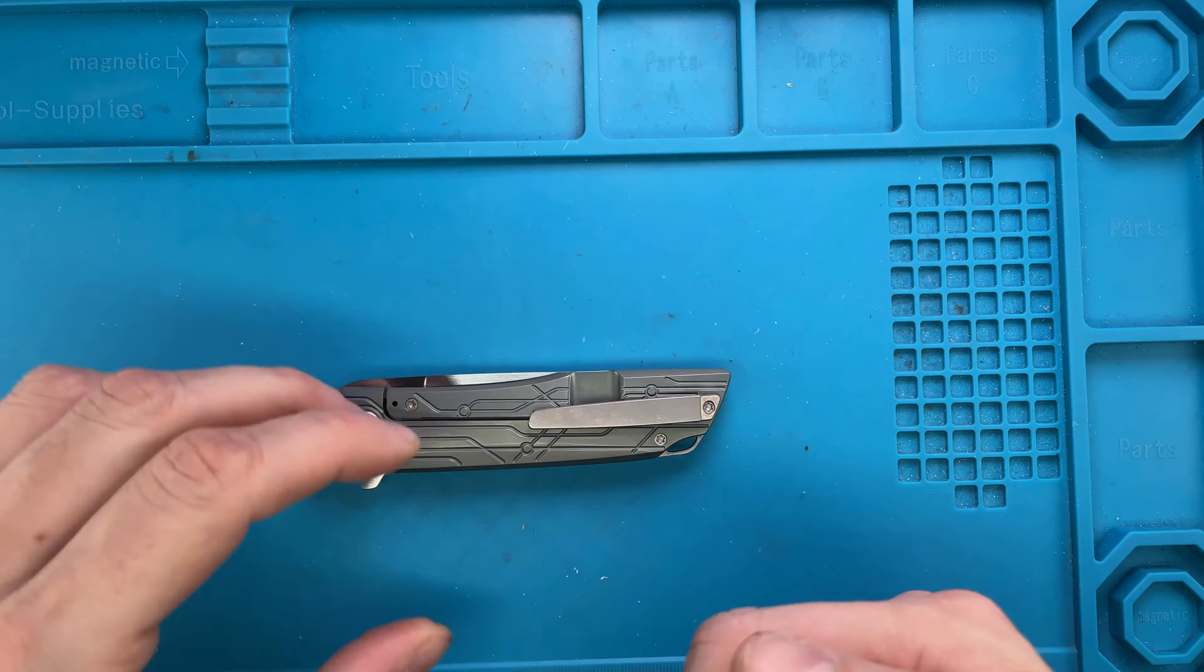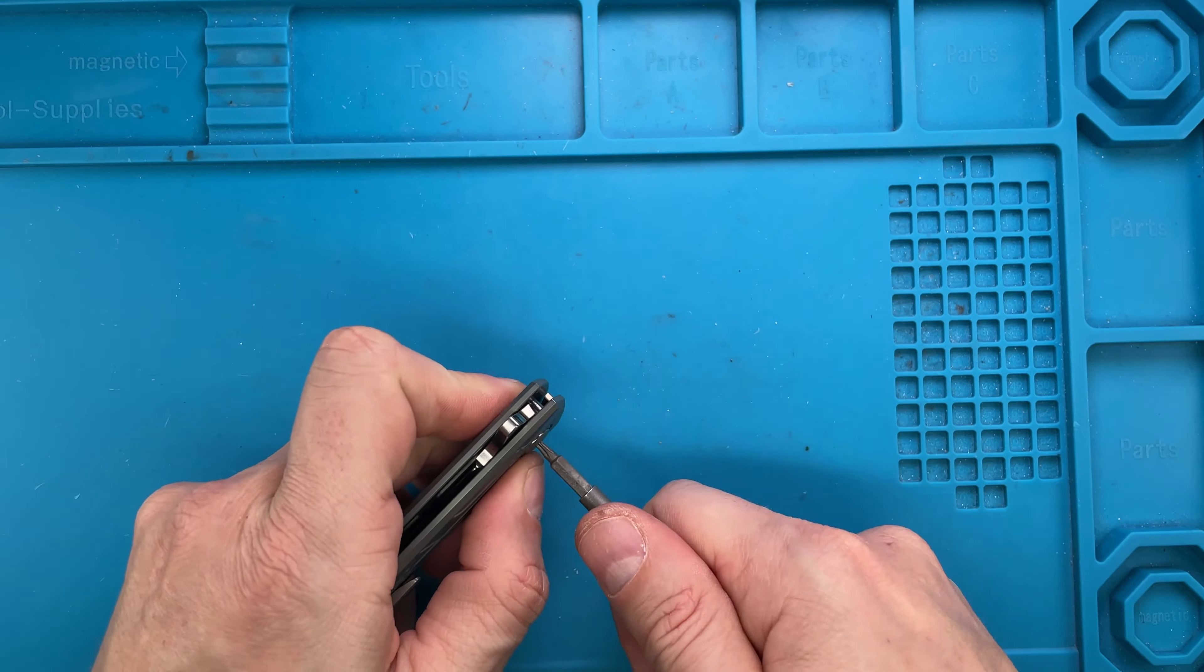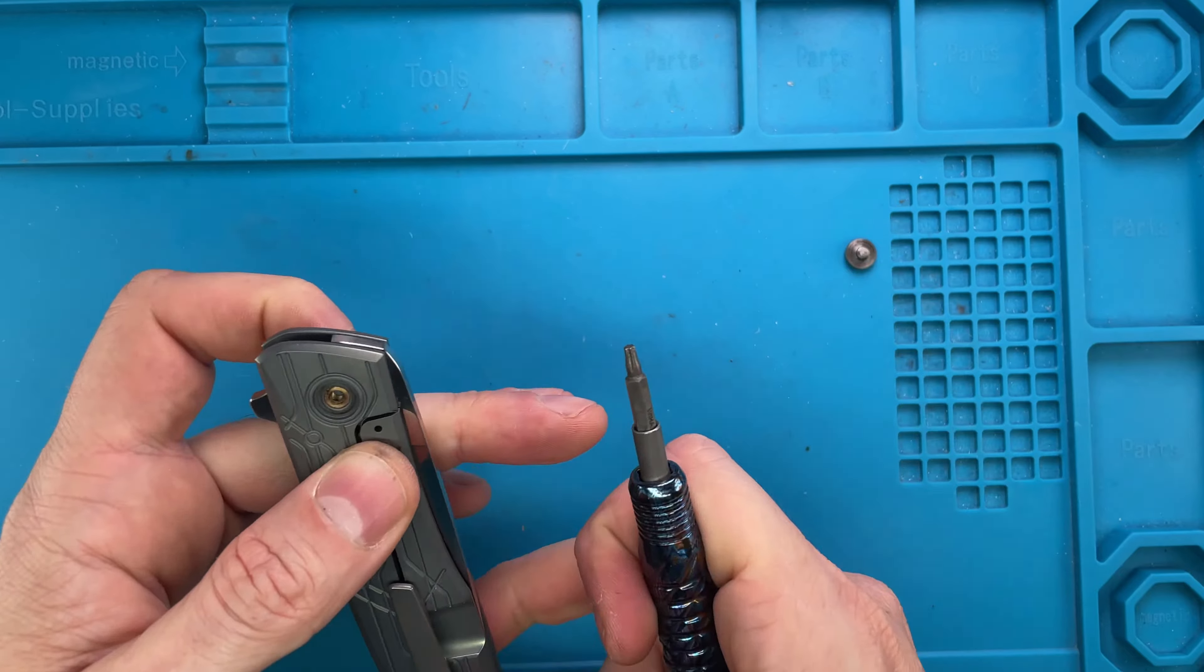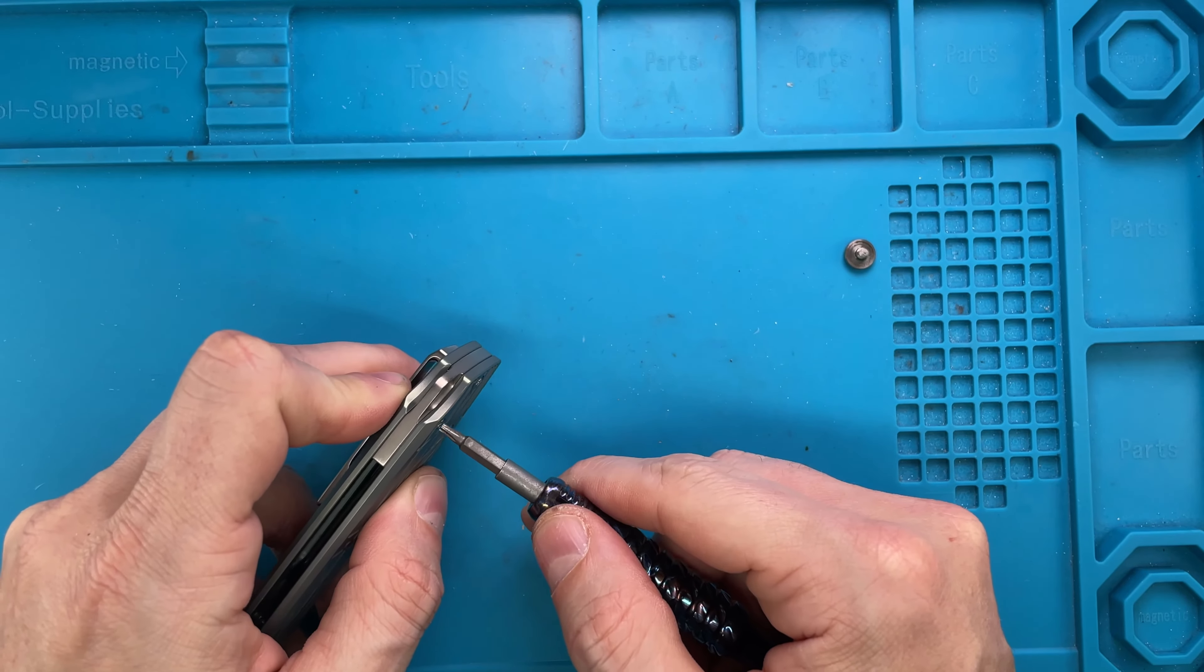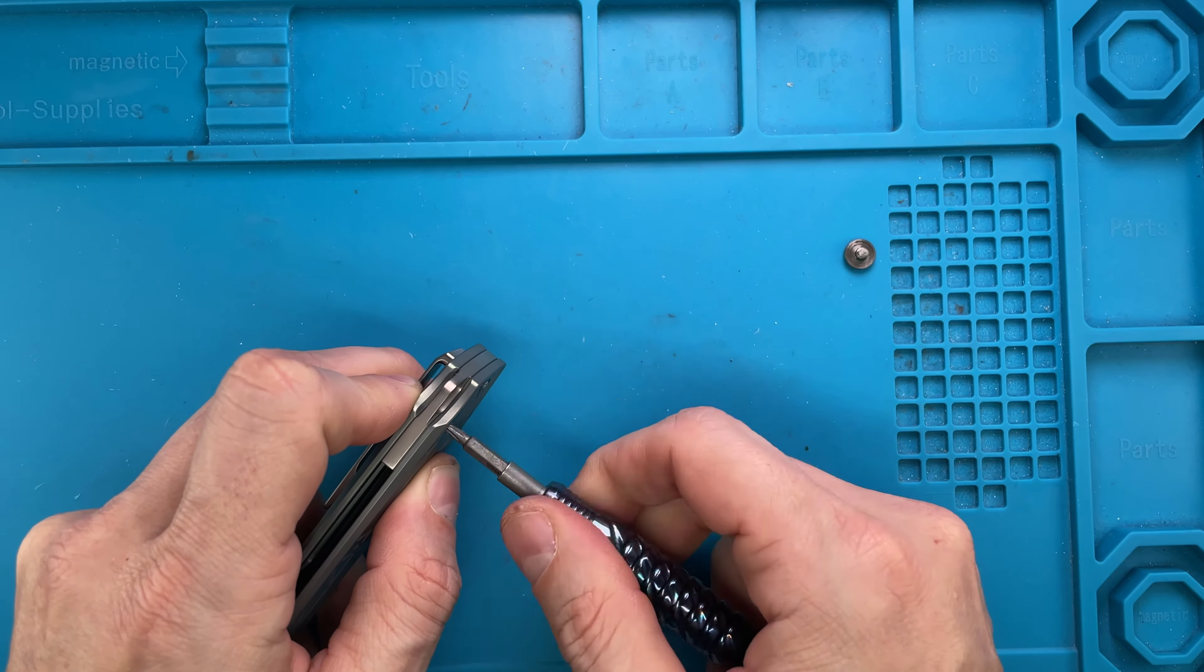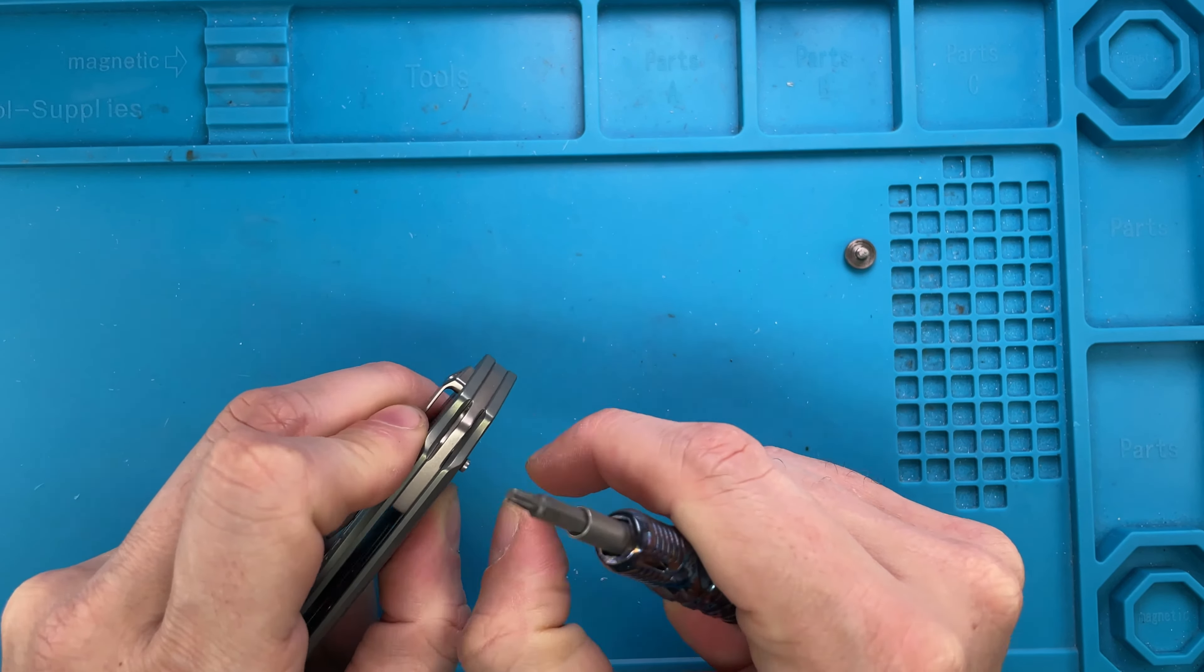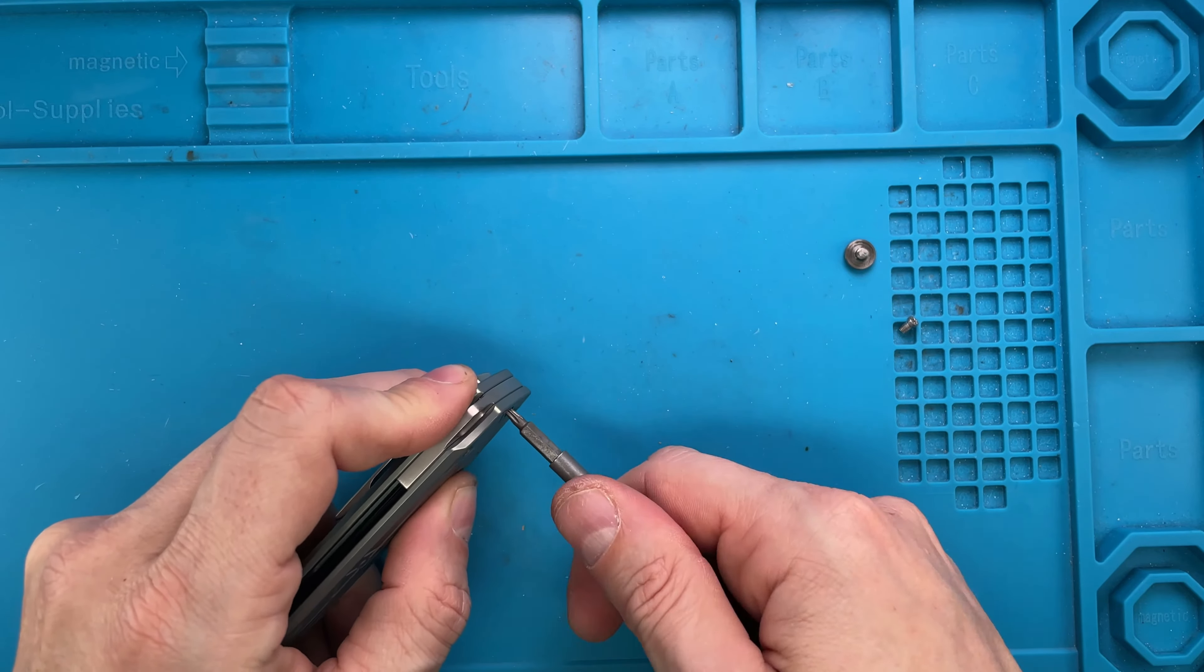You're gonna need a T8 Torx bit to take this guy apart. Let's start from the pivot, like so. Here you go. And we gotta do the handle screws from this side. That is one, and there is two right over there.